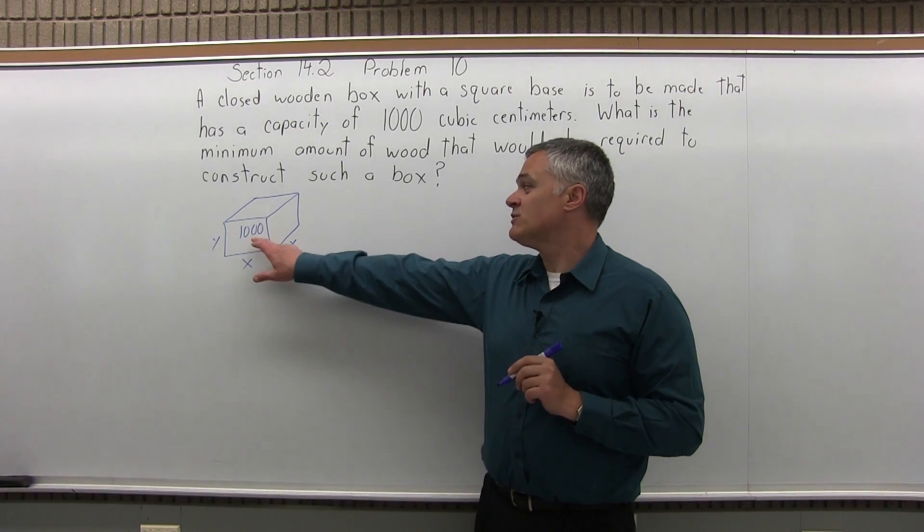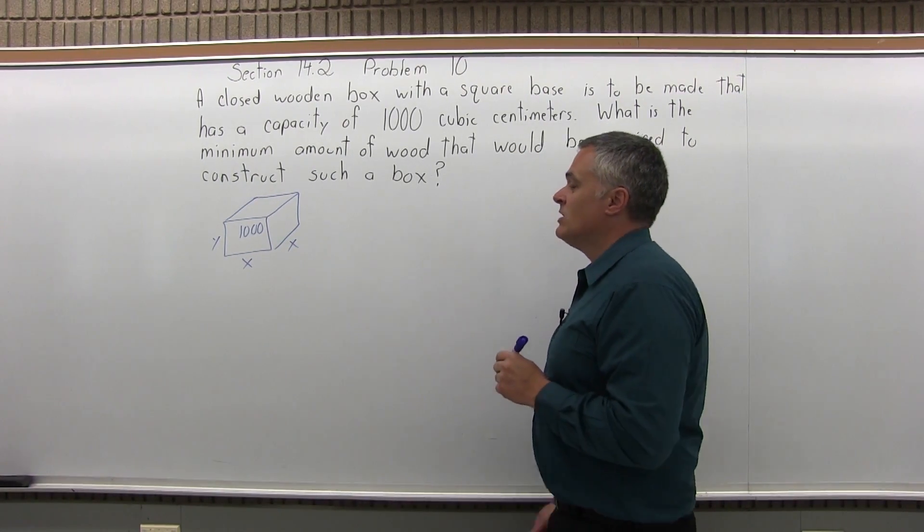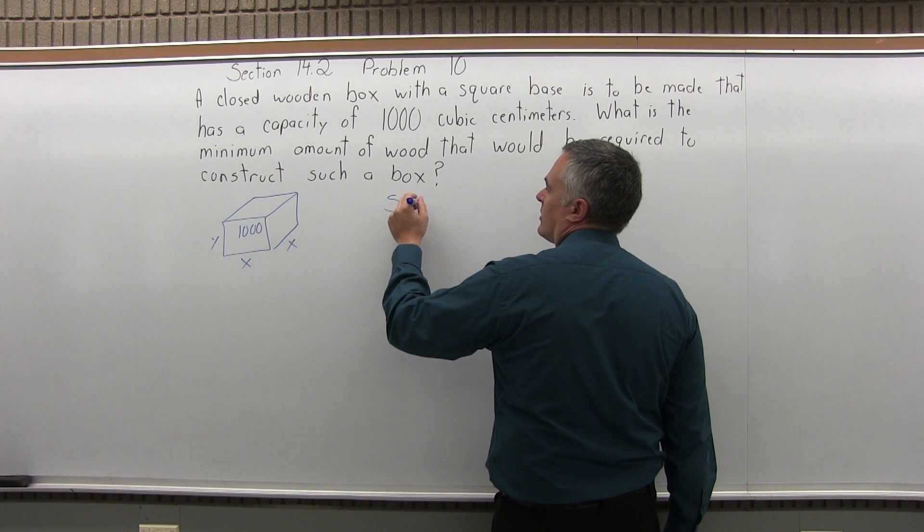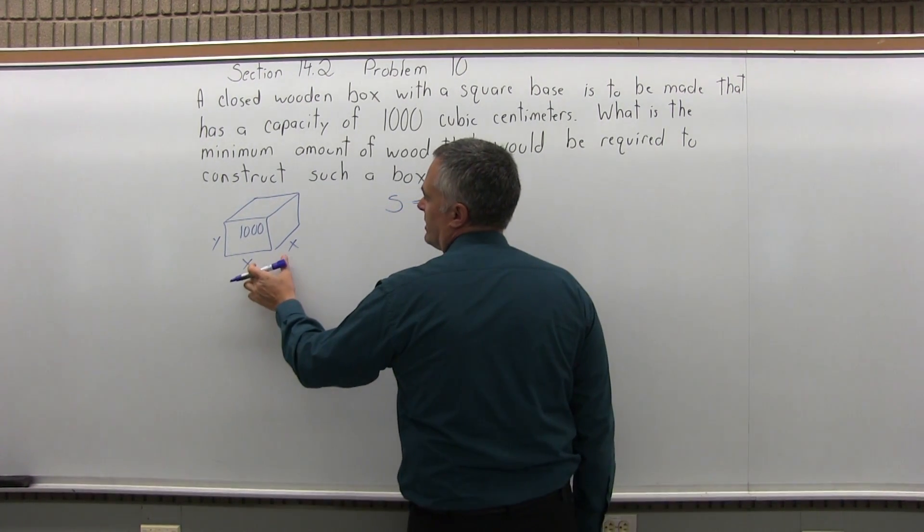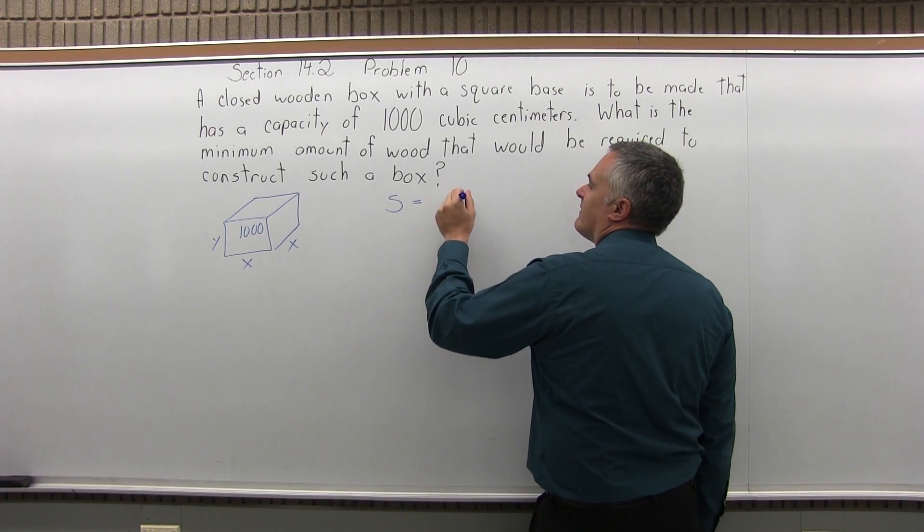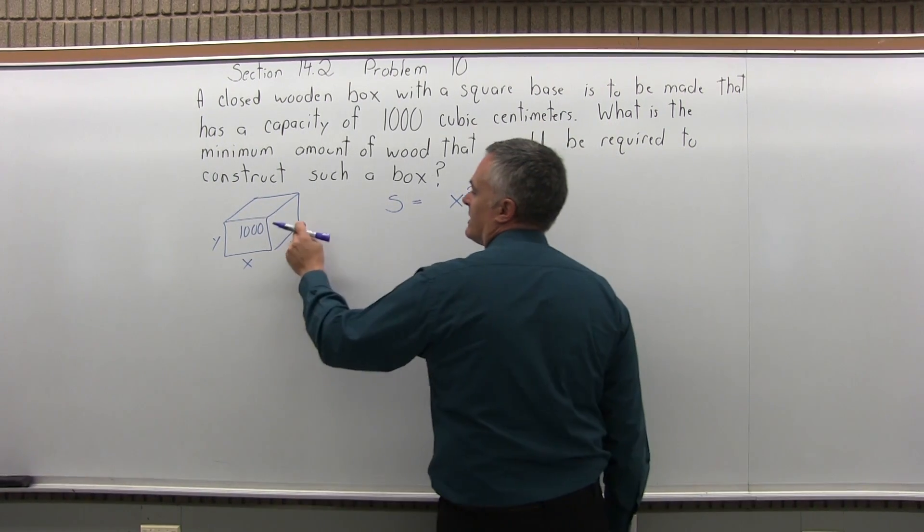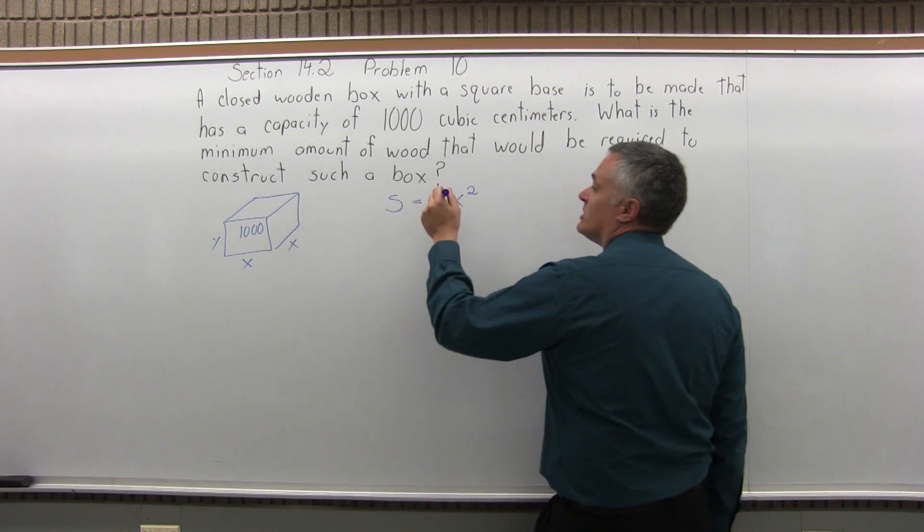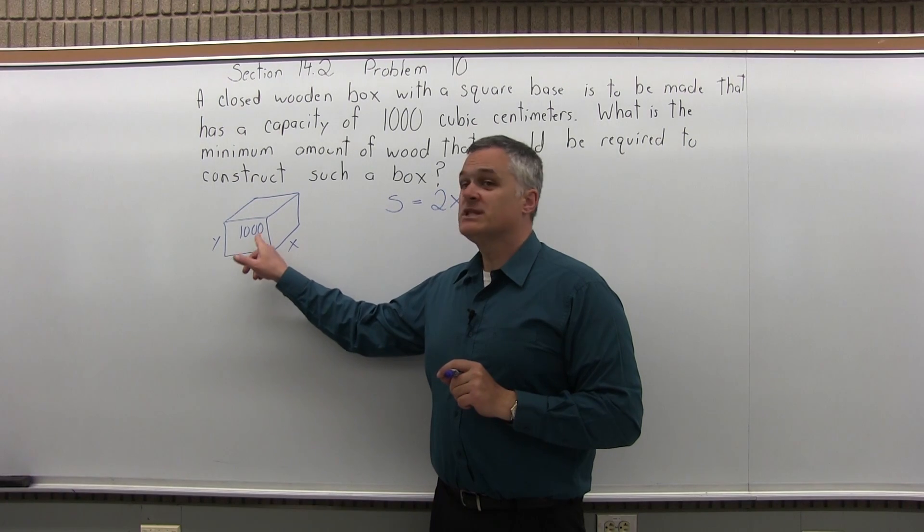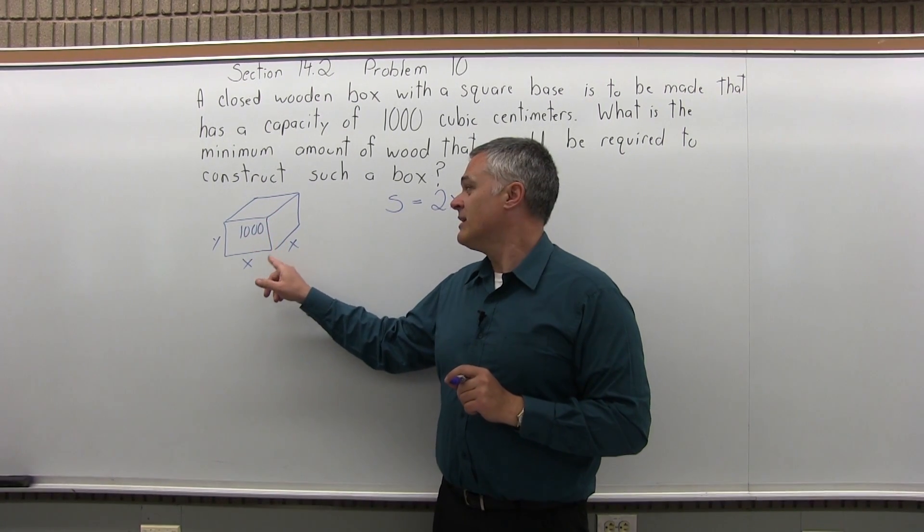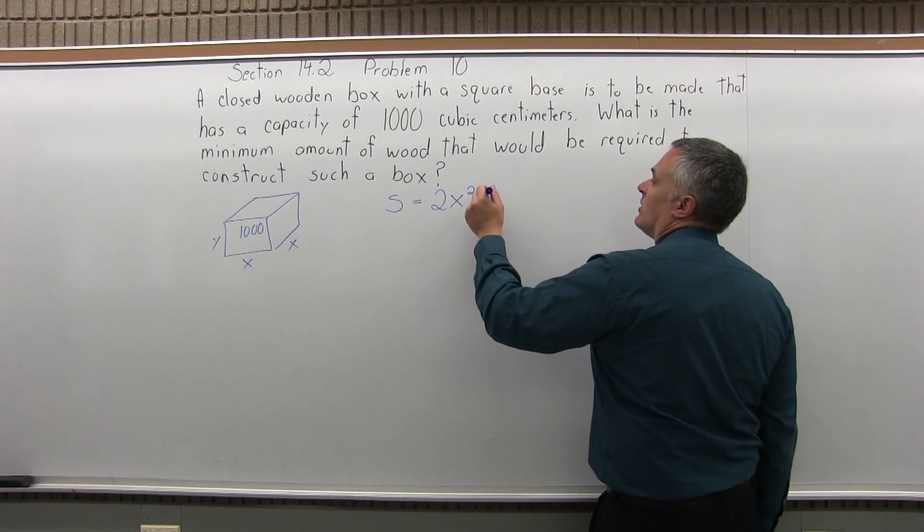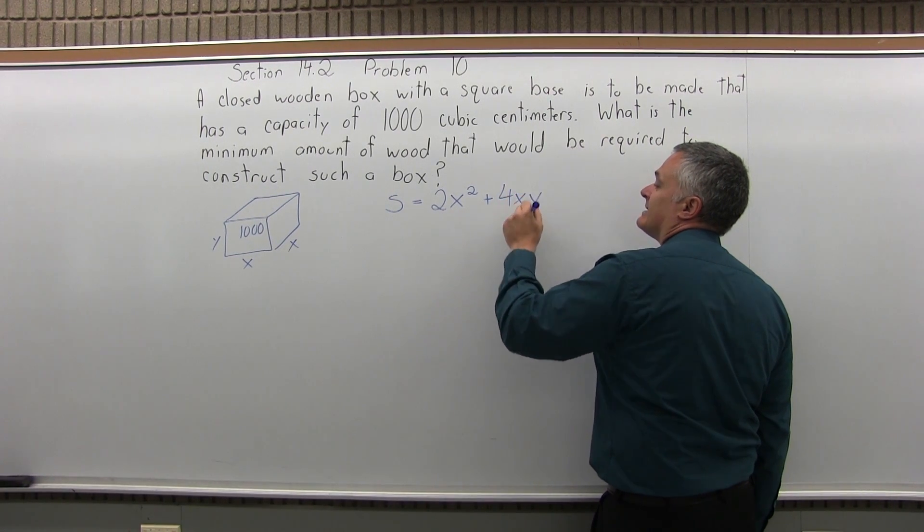So you want to have that much volume but not use too much wood. So the surface of the box, we'll call S for surface, which will measure how much wood. You'll have a top and a bottom that are both x by x. So you're going to have x squared for the surface area and there's one on the top, one on the bottom. So there's two of those, 2x squared. And now you have four sides, a front, a back, a left and a right that have area x times y. So 4x times y.